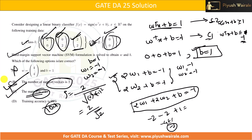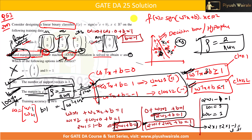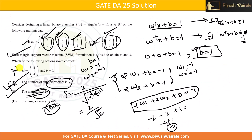It doesn't matter which class you label as +1 or −1 — the weights will differ in sign but the number of support vectors and the margin remain the same. I hope you understand what we discussed in this video. That's it from my side — thank you.